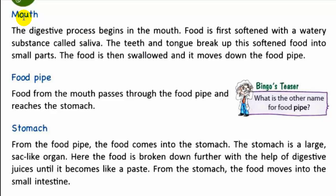Let's see the first organ of the digestive system: the mouth. The digestive process begins in the mouth. Food is first softened with a watery substance called saliva. The teeth and tongue break up this softened food into small parts. The food is then swallowed and it moves down the food pipe.